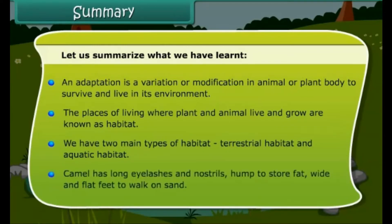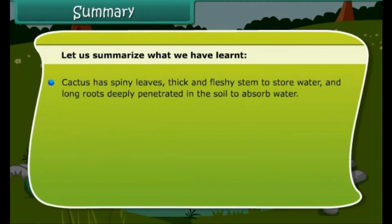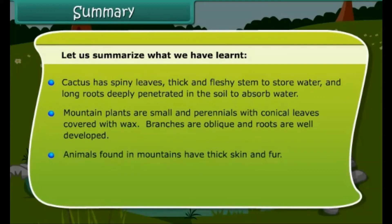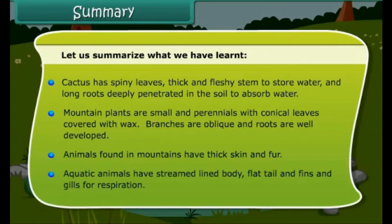Camel has long eyelashes and nostrils, a hump to store fat, and wide and flat feet to walk on sand. Cactus has spiny leaves, a thick and fleshy stem to store water, and long roots deeply penetrated in the soil to absorb water. Mountain plants are small and perennials with conical leaves covered with wax; branches are oblique and roots are well developed. Animals found in mountains have thick skin and fur. Aquatic animals have a streamlined body, flat tail and fins, and gills for respiration.